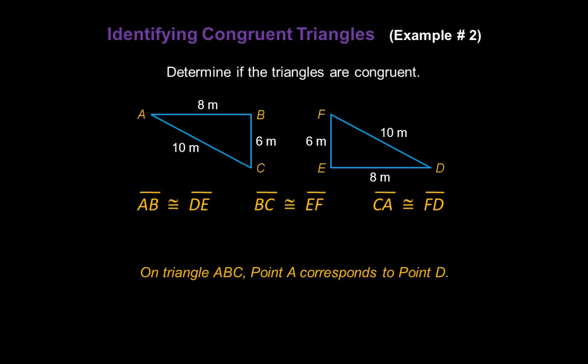Here's what that means. On triangle ABC, we know that point A corresponds to point D on the other triangle. So our congruent statement will be triangle ABC is congruent with triangle D as the first point we'll write down. The second point, point B, corresponds to point E on the other triangle. So the next letter we'll write is E.